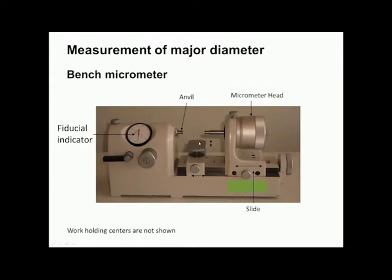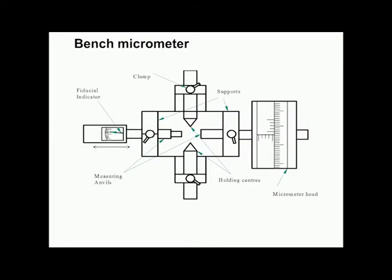On the table surface, fixtures can be placed to hold work pieces. The schematic diagram of the bench micrometer shows the micrometer head with scales on the thimble and barrel, measuring anvils, clamps, fiducial indicator, and holding centers for the screw threads. It is essential that the axis of the holding centers be perpendicular to the axis of the bench micrometer.